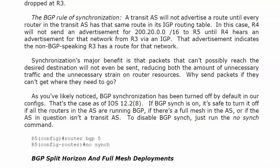BGP sync is turned off by default in all of our configs so far, and that is the case as of iOS 12.2.8. Anything you're working with pre that — probably lab environment routers — you might have to actually enter the command no sync. But if BGP synchronization is on, it is safe to turn it off if all the routers in the AS are running BGP, if there's a full mesh in the AS, or if the AS in question is not even a transit AS. To disable BGP synchronization, just run that no sync command as shown on the board on router 5.